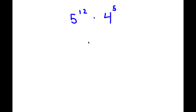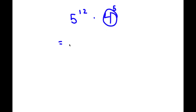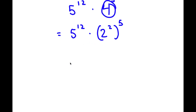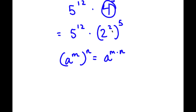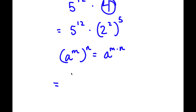All right, so for this problem, I have 5 to the power of 12 times 4 to the power of 5. To solve this, I'm going to first rewrite 4 as 2 to the power of 2. So now I have 5 to the power of 12 times 2 to the power of 2, to the power of 5. Using the rule a^m^n = a^(m×n), 2 to the power of 2 to the power of 5 equals 2 to the power of 10.